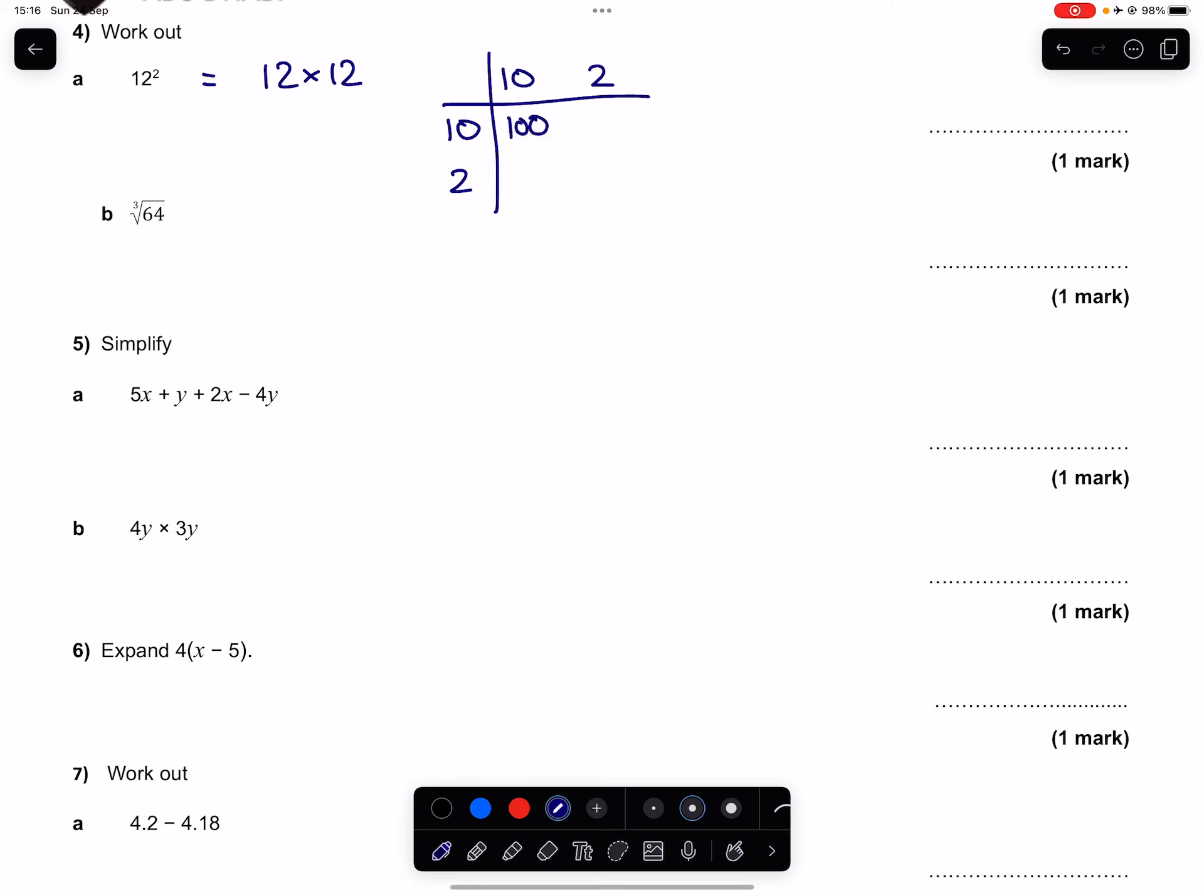10 times 10 will give us 100. 10 times 2 is 20. 2 times 10 is 20. 2 times 2 is 4.